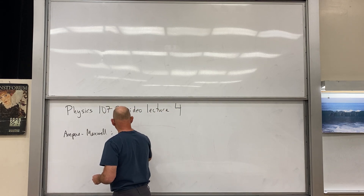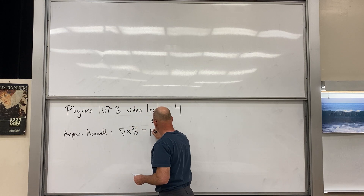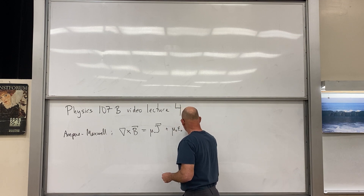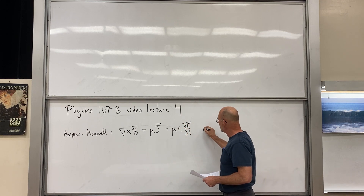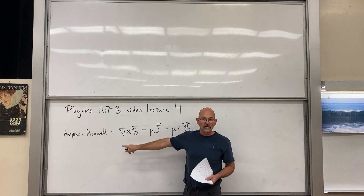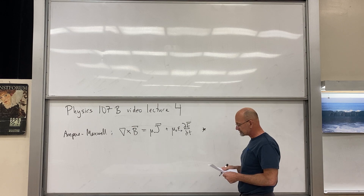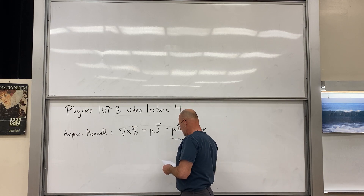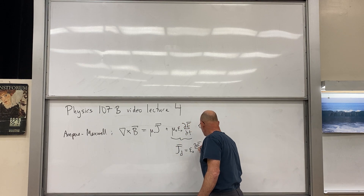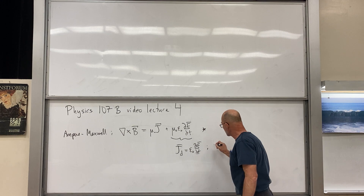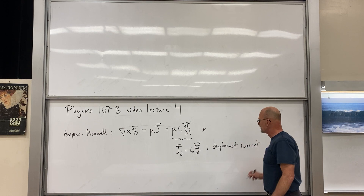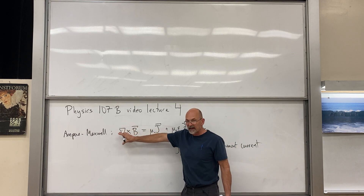Here's the Ampere-Maxwell equation: the curl of the magnetic field is equal to μ₀ times the current density vector plus μ₀ε₀ times ∂E/∂t. This extra term was added in order to make the divergence of the right side vanish, because the divergence of a curl vanishes. The displacement current is j_displacement = ε₀ ∂E/∂t.